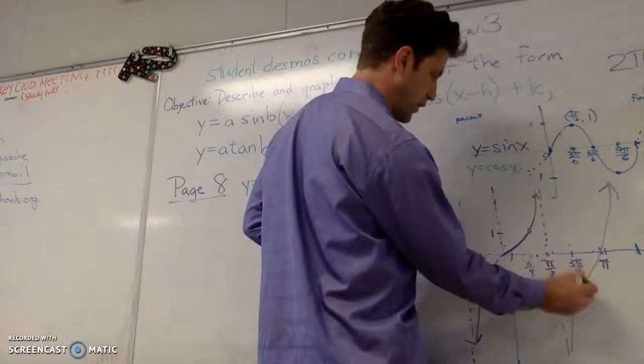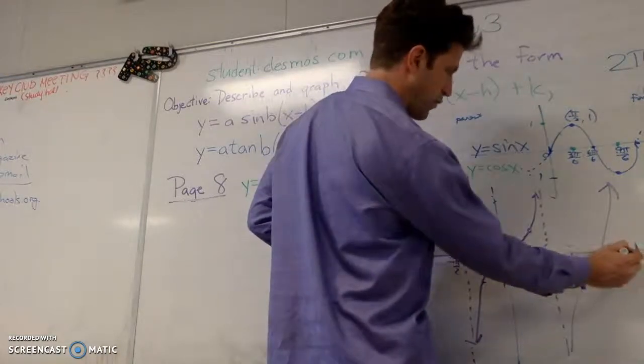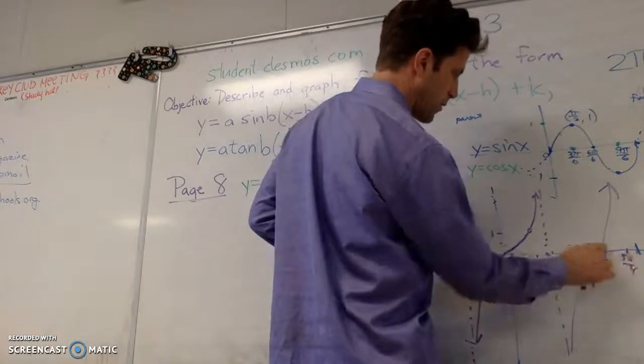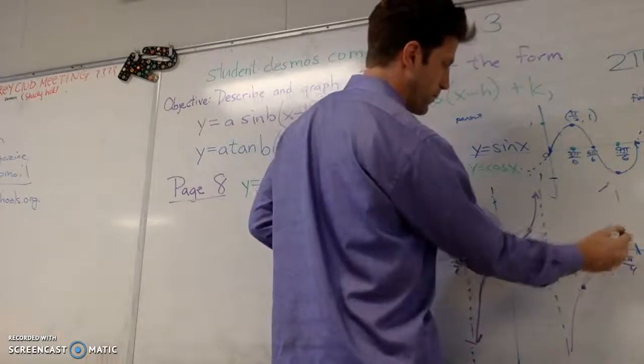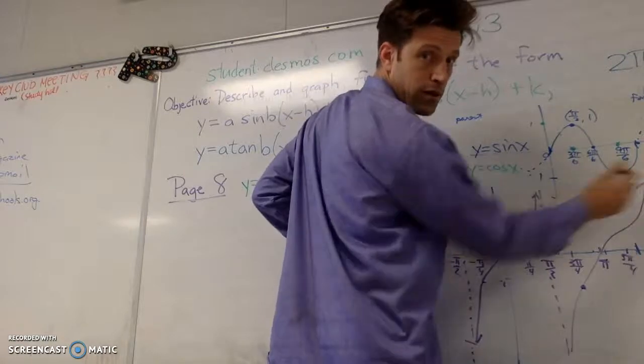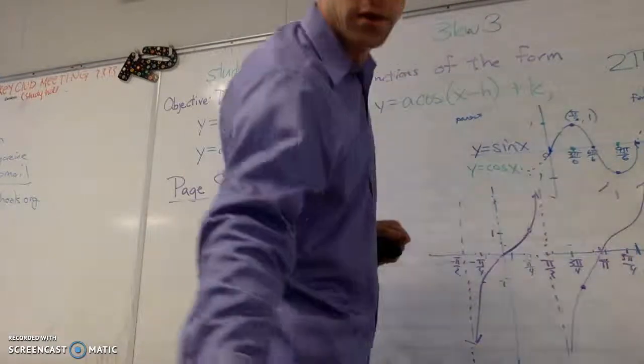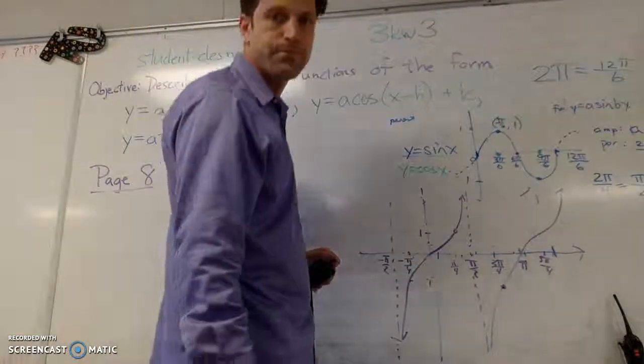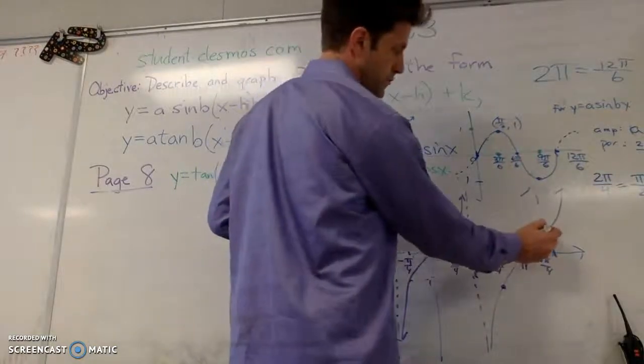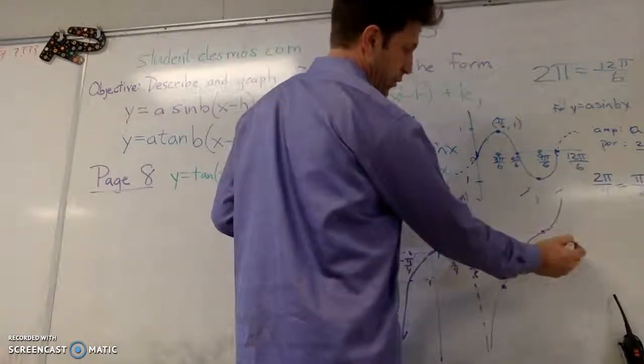Negative pi over 4 plus pi is 3 pi over 4. You've got the negative 1. 5 pi over 4, you've got the positive 1. And then, I'm off the screen.